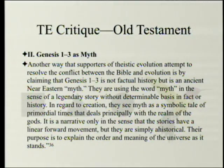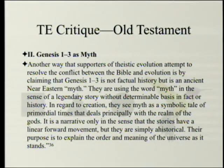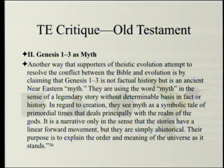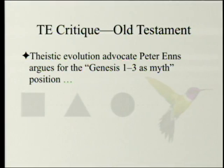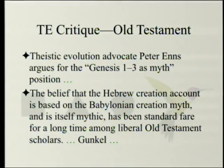Genesis 1-3 as myth. Another way that supports a theistic evolution attempt to resolve the conflict between the Bible and evolution is by claiming that Genesis 1-3 is not factual history but is an ancient Near Eastern myth — using the word 'myth' in the sense of a legendary story without determinable basis in fact or in history. In regard to creation, they see myth as a symbolic tale of a primordial time that deals principally with the realm of the gods, simply ahistorical, with the purpose of explaining the order and meaning of the universe. Theistic evolution advocate Peter Enns argues for the Genesis 1-3 as myth position.